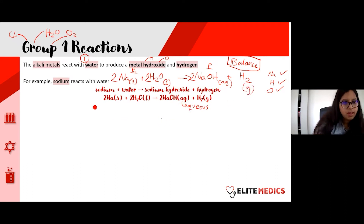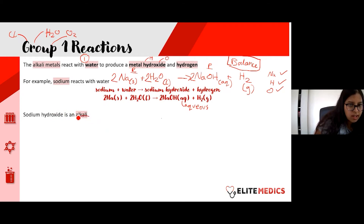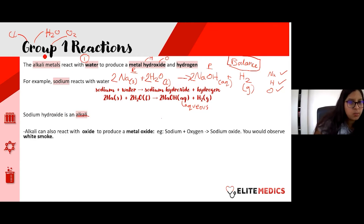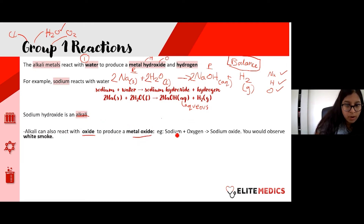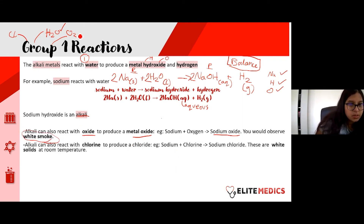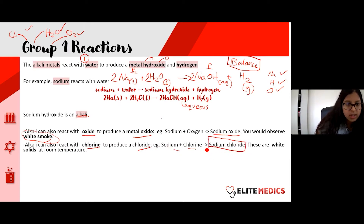The product of an alkali metal and water is an alkali — which makes sense. The second reaction is with oxygen: sodium reacts with oxygen to produce sodium oxide, a metal oxide. What you'd observe is the production of white smoke. The third reaction is with chlorine: an alkali metal reacts with chlorine to produce a chloride — for example, sodium + chlorine → sodium chloride, which is our table salt. These are white solids at room temperature.